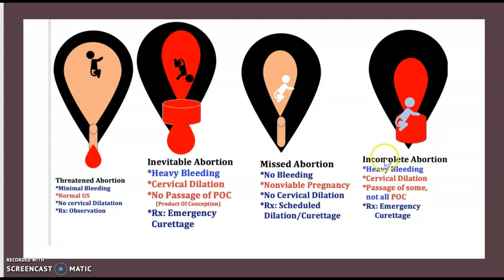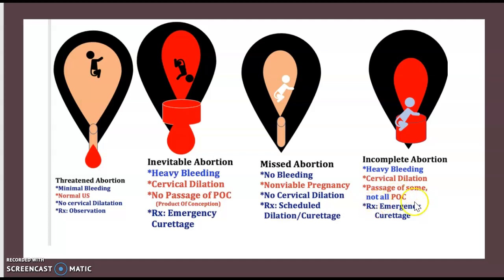The fourth one is incomplete abortion. There is heavy bleeding, cervical dilatation, and passage of some — but not all — products of conception. The management is emergency curettage.